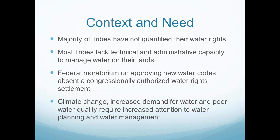To begin this webinar, we'd like to set the context and need that the Tribal Water Working Group has established. Of the 566 federally recognized tribes, many have not quantified their water rights. In fact, only 40 tribes have treatment as a state, and only 42 have water quality standards approved. Most tribes lack the technical and administrative capacity to manage water on their land, and there's a federal moratorium on approving new water codes absent a congressionally authorized water rights settlement. With climate change occurring, there's increased demand for water, and poor water quality requires increased attention to water planning and management. There's an urgent need for tribes to quantify their rights and manage their resources as conflicts between users and uses increase.